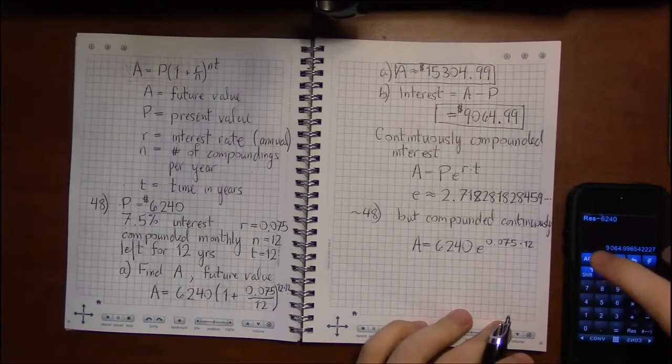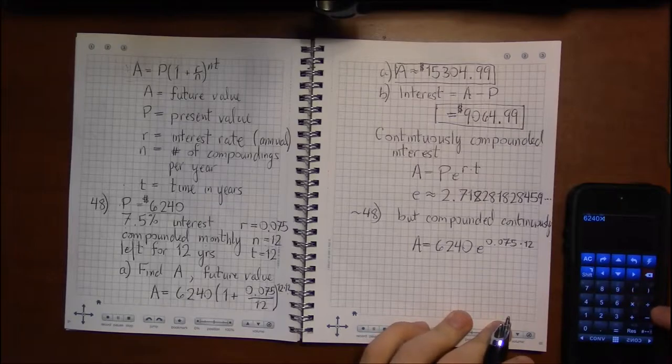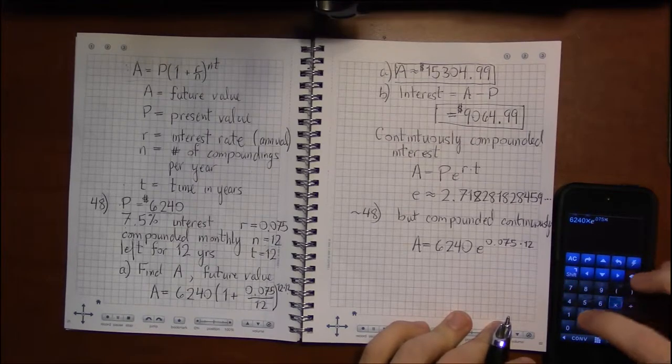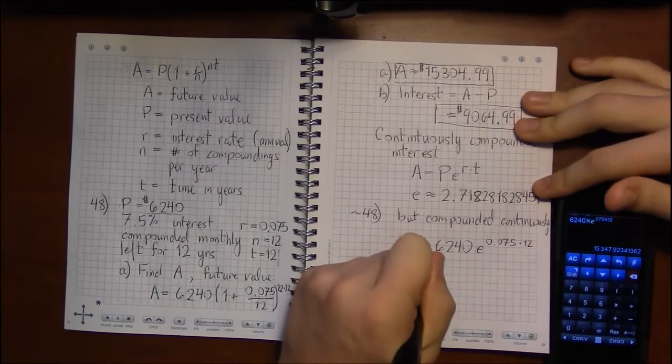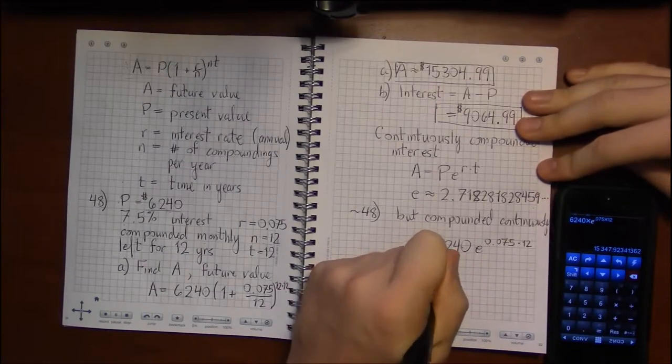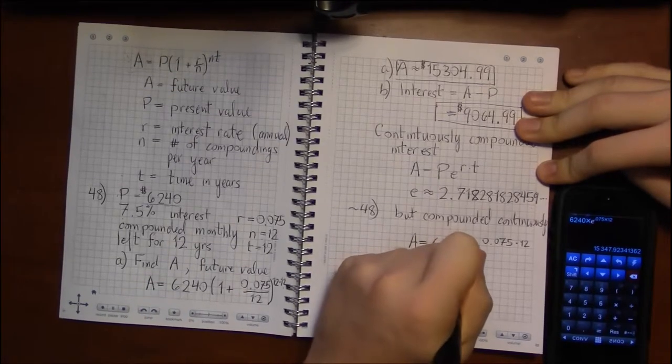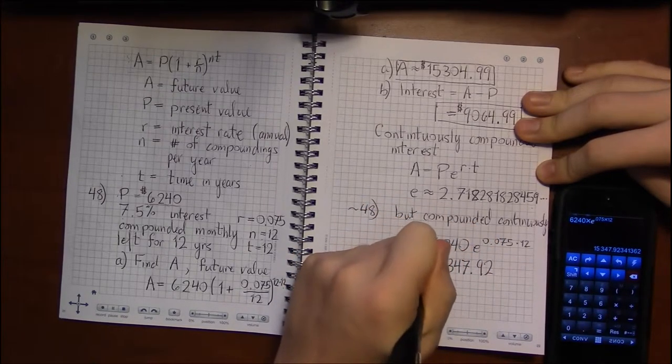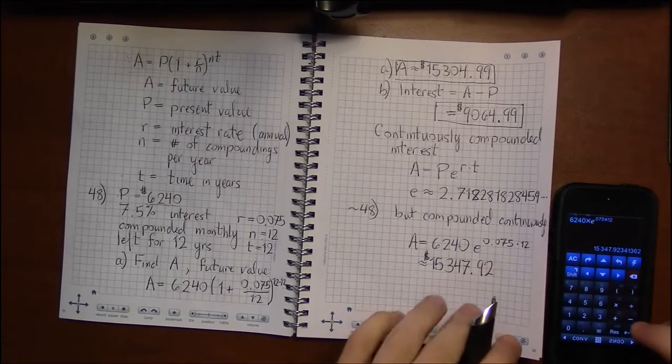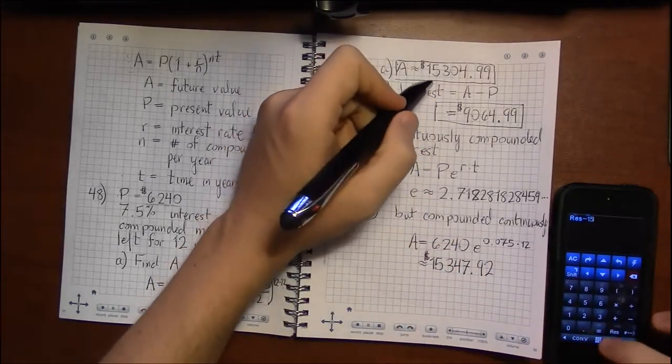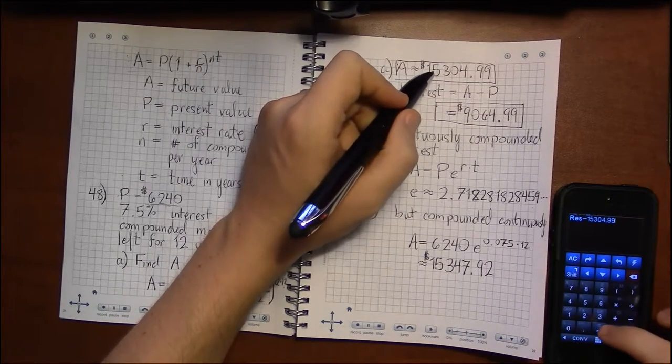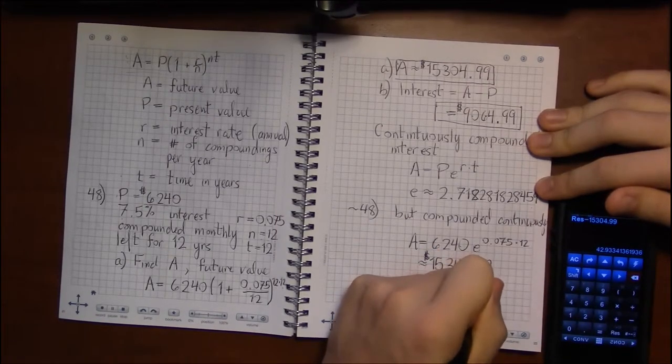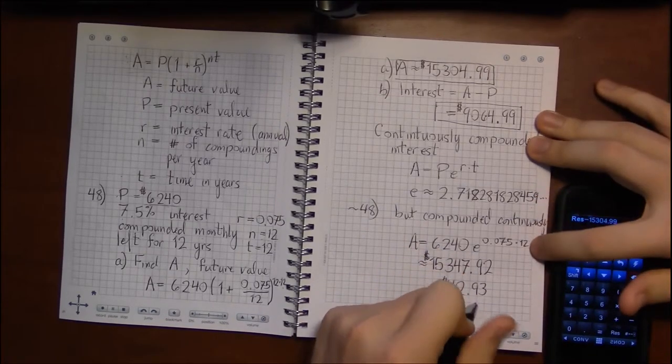And so if I plug this into the calculator, 6,240 times, and typically calculators will have an exponential feature to them. And we get that our final balance in 12 years is going to be $15,347.92, rounding down again. So the difference in this case, between what we had before, isn't a great deal. It's about $42.93 more than if we compounded monthly.